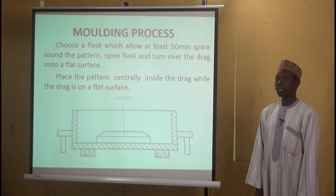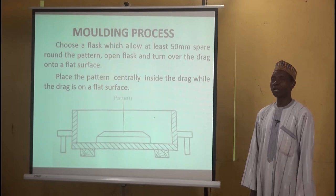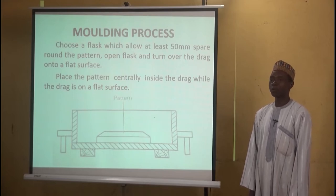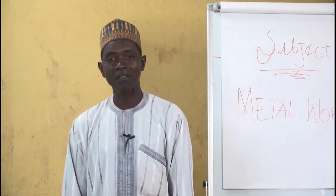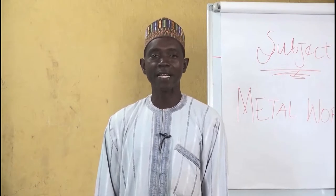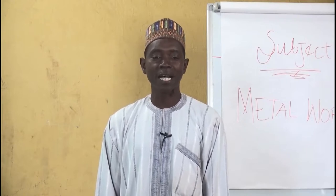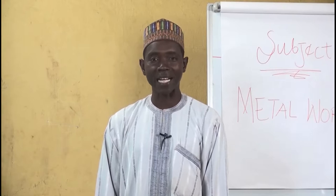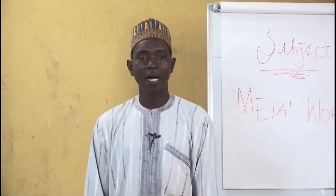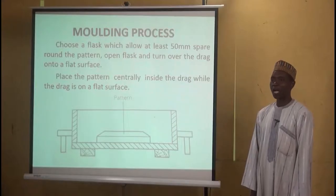Before we talk about the molding process, if you can remember during our last lesson, we talked about sand casting. At that point, we were able to define casting, which is a process of melting a metal, pouring it into a cavity, allowing it to solidify, then removing it. What you have at the end is what we call a casting. We also talked about casting equipment: we have the flask or the molding box, followed by the pattern, then the sand, and we have the coal.